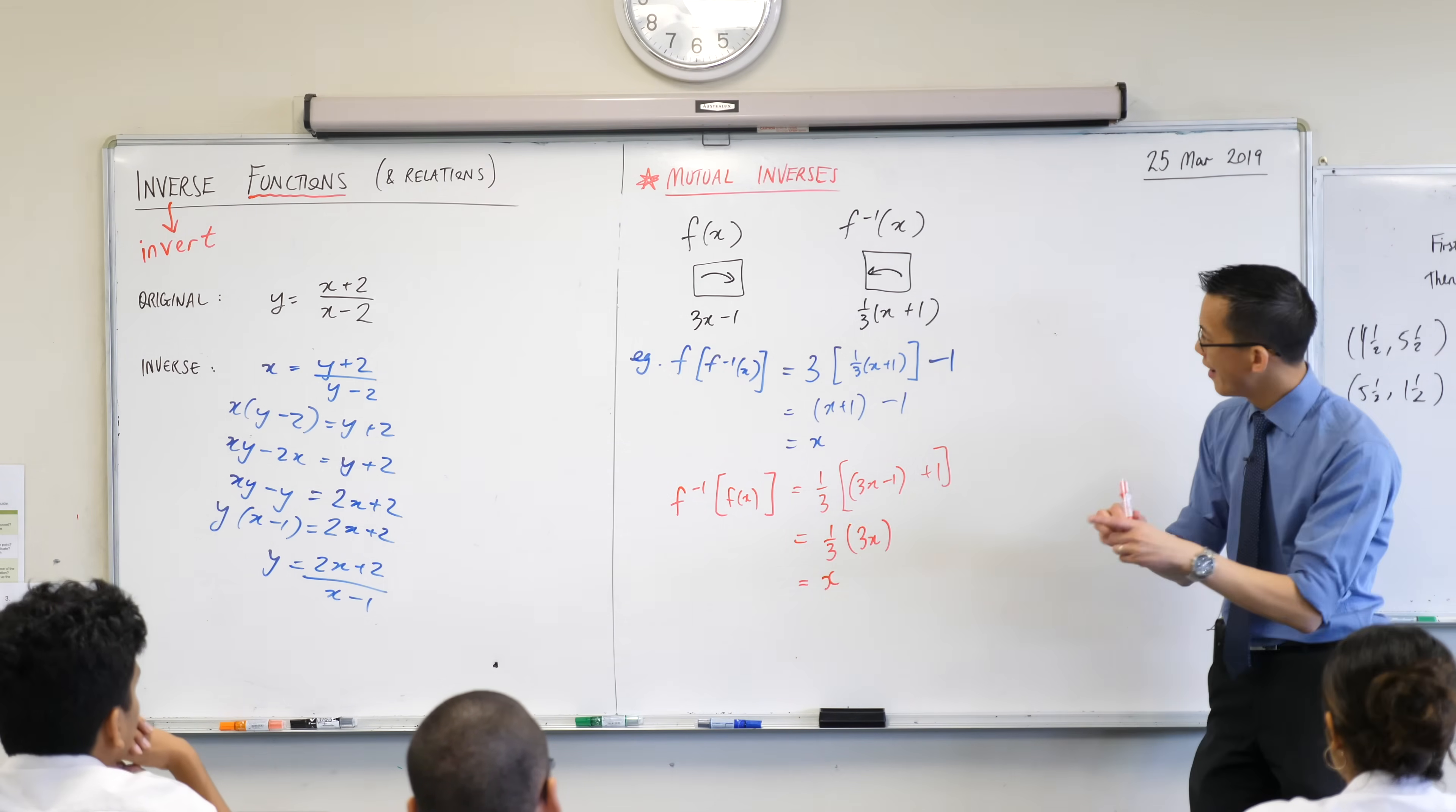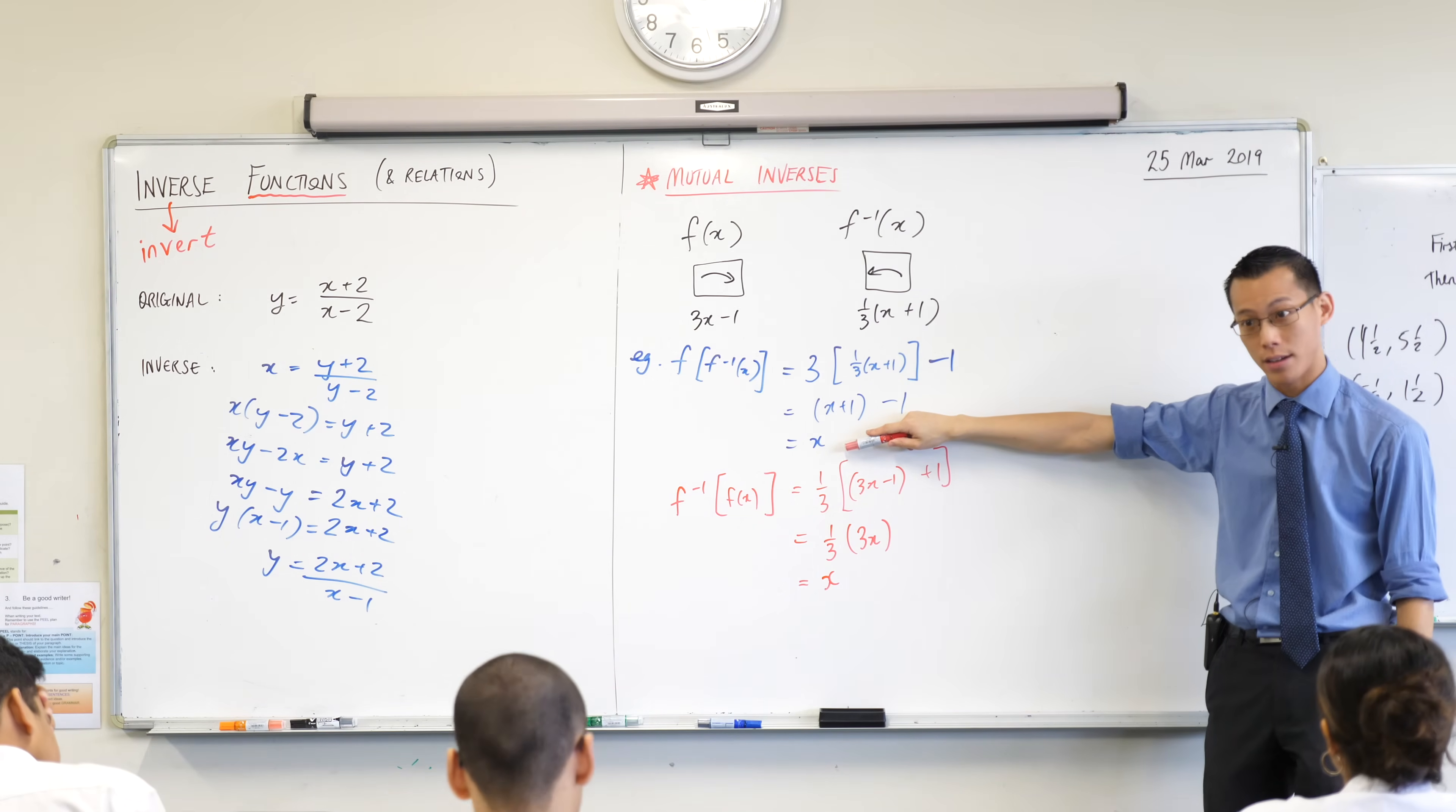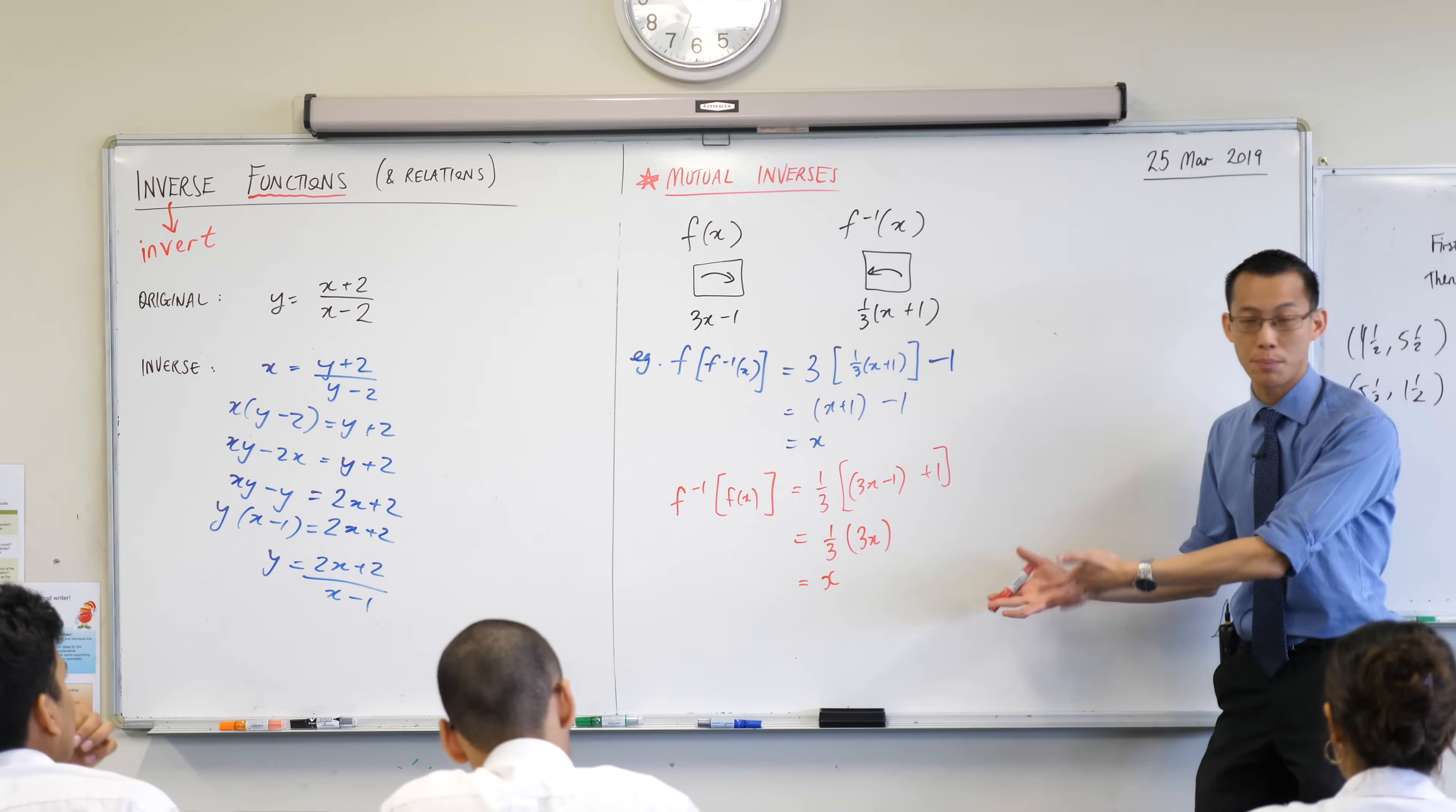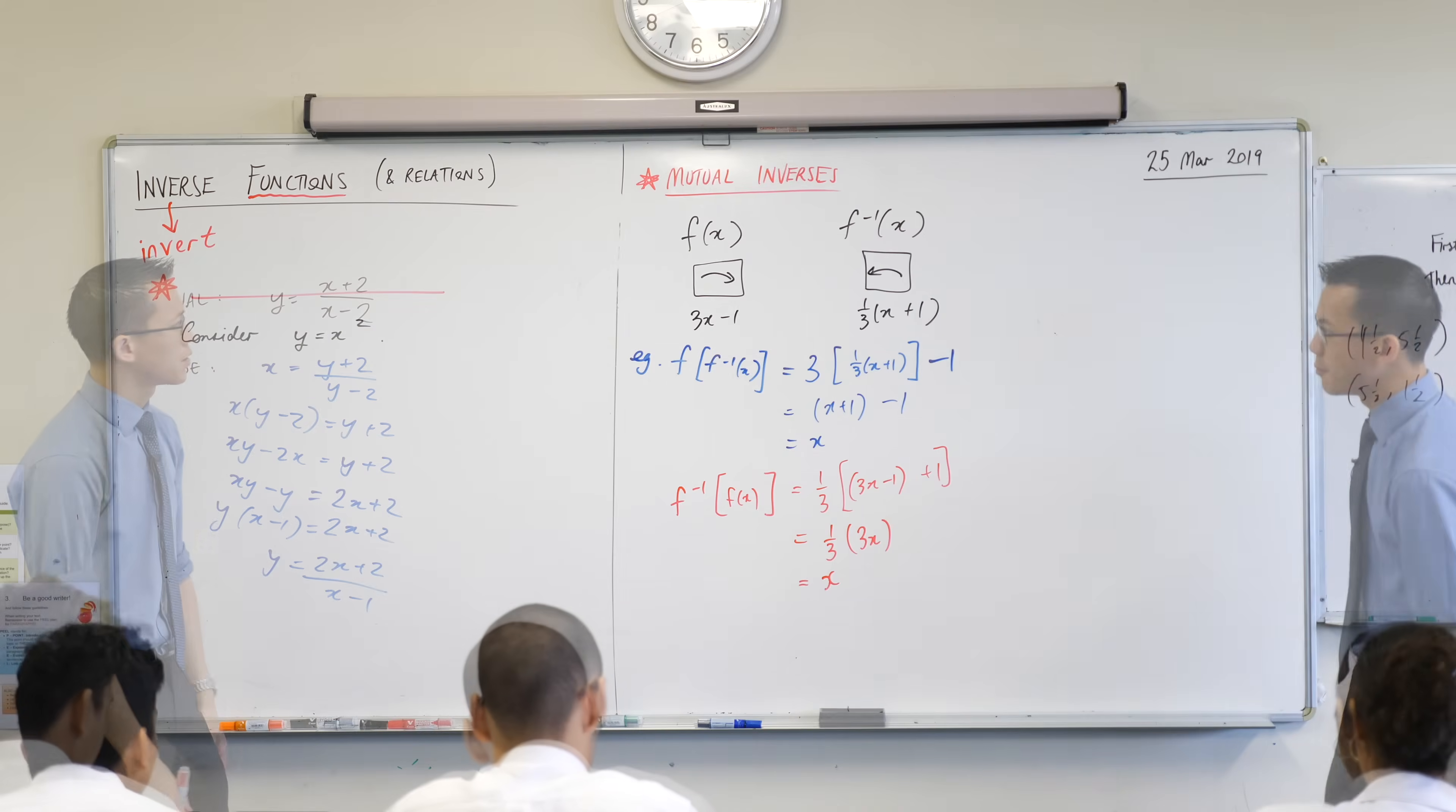Now, think about what this is. You start with something, you do something, and then you undo it. Unsurprisingly, you end exactly where you started. Does that make sense? You do, you undo, or you undo then you do. You're always going to come back where you began, which is why we call them mutual inverses. They kind of both undo each other, which is what mutual means.